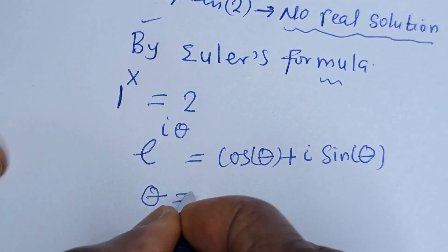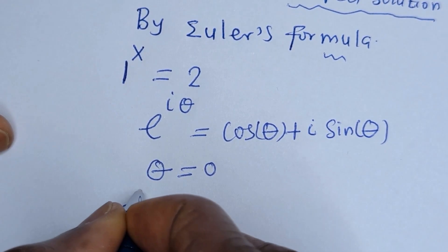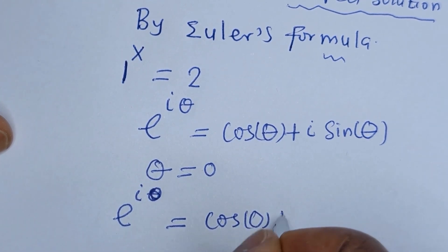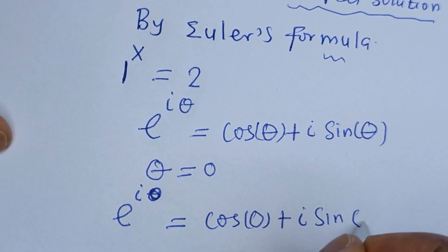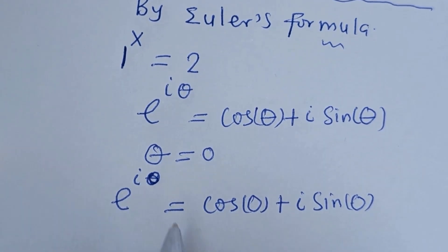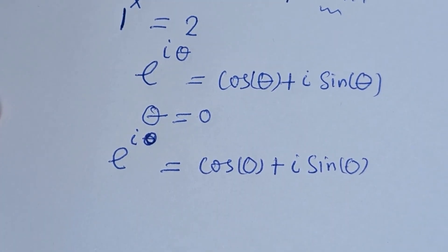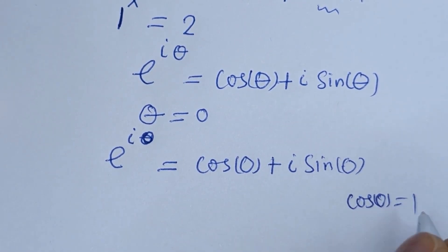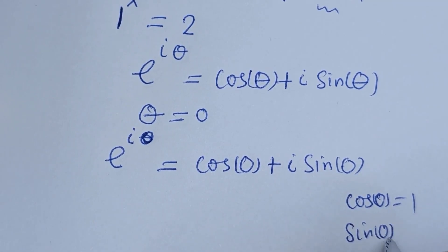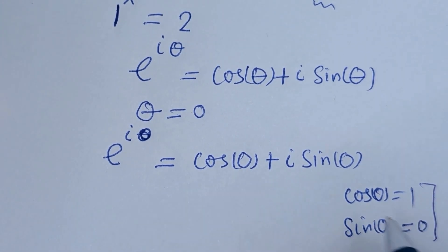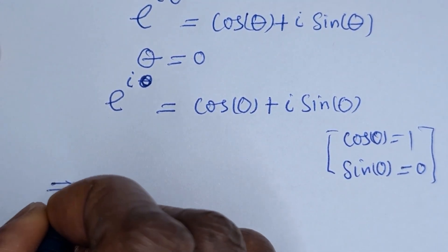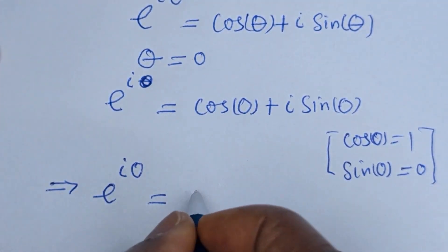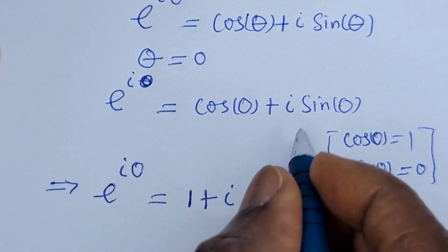When theta is equal to 0, we have e of i times 0 is equal to cos 0 plus i sine 0. Now cos 0 is equal to 1. So e of i times 0 is equal to cos 0, that is 1, plus i sine 0, that is 0. So we have 1 plus 0.